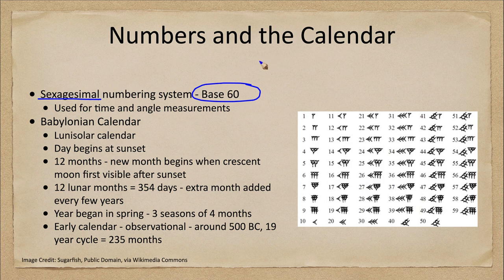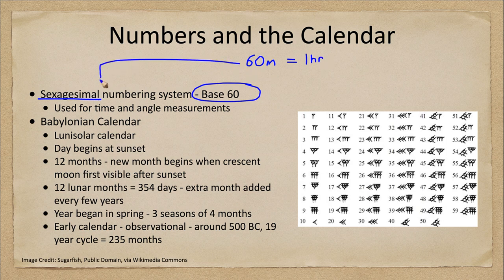We measure things like time — we have hours, minutes, and seconds — and we know that there are 60 minutes in one hour. Why are there 60 minutes in an hour? It's because of the sexagesimal numbering system. And of course there are also 60 seconds in one minute, exactly the same system we are using here.